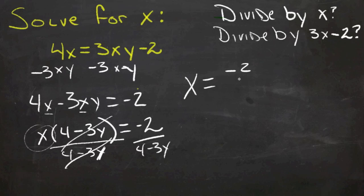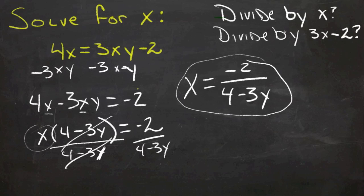So we've solved that equation for x. x equals negative 2 over 4 minus 3y. So that's the way I would recommend doing that one. Don't actually do a division first at all. Do a subtraction first so that you can factor out that x, and that's how you would get it by itself so that you could solve for it.